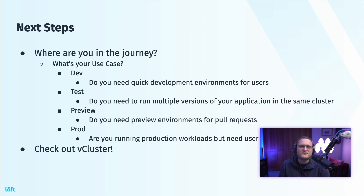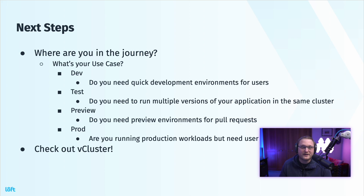So what are some next steps? Where are you in your journey? What's your use case — are you doing dev, test, preview, prod? If you're doing dev, do you need a quick development environment for users? If you're doing tests, do you need to run multiple versions of your application in the same cluster? If you're doing preview, do you need preview environments for pull requests? And if you're doing prod, are you running production workloads but need user or customer isolation? All of that can be handled with vCluster. You can do some of that with namespacing, but it takes a lot of configuration and work. With vCluster, you get there a lot faster.